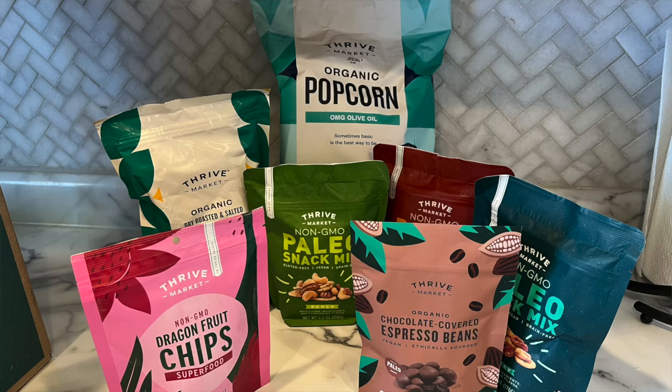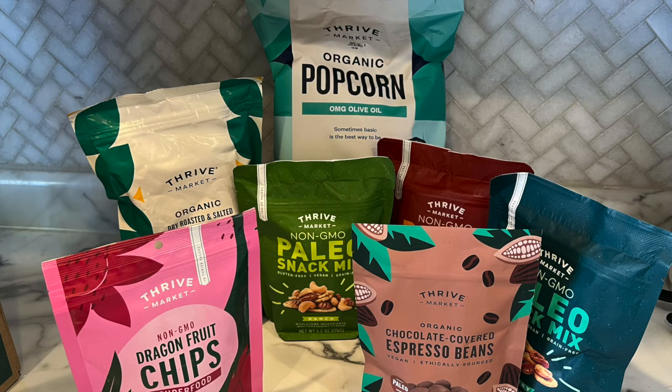We all know that playing cards and snacking go hand in hand. And Thrive Market is here to supply you with some exceptional snacks for your next game night. At Thrive, you can get your favorite organic and non-GMO products at wholesale prices delivered straight to your door. And Thrive members save an average of $32 per grocery order. Some of my favorite snacks on game night are the dry roasted cashews, snack mixes, and organic popcorn.